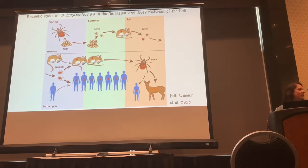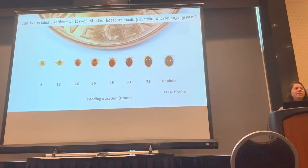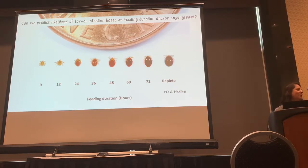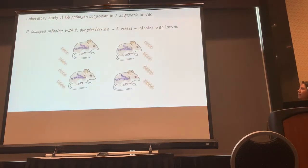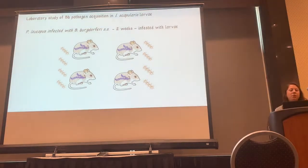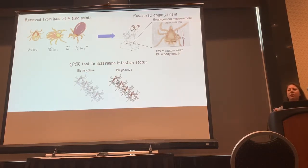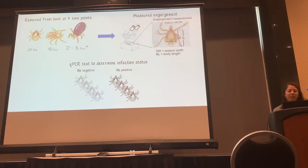We didn't actually go into this thinking we'd get the result that we did. We wanted to get a prediction of what is the likelihood of larval infection based on how engorged they were in the process — a very practical methodology question: how many larvae would we have to test to determine if a mouse is actually infected with Borrelia burgdorferi? What we did was place larvae on infected white-footed mice, Peromyscus leucopus, then pulled those larvae off at time points — 24, 48, 70 to 96 hours — and measured their engorgement using a ratio of body measurements: the skeletal shield to body length from the basis capituli to the tip of the abdomen.